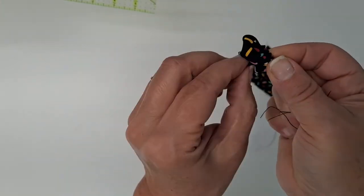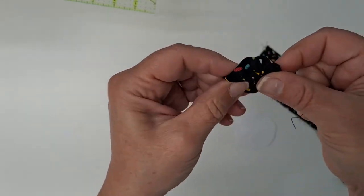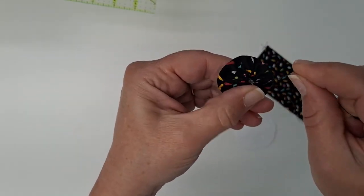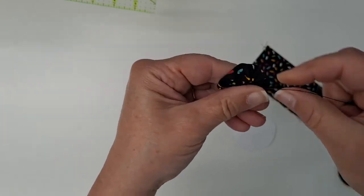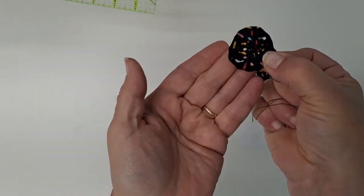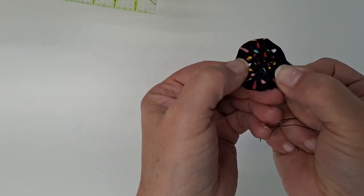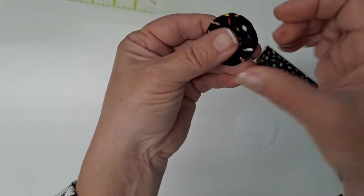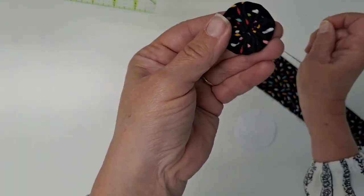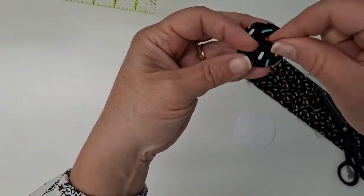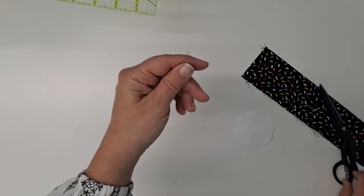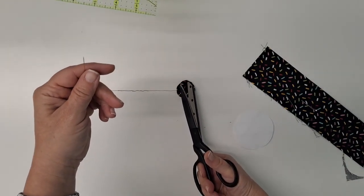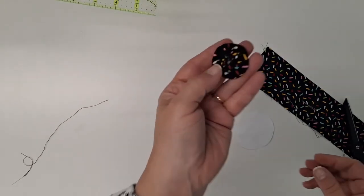That closes that up. I'm going to kind of play with how it gathers around, pull that tight so it closes in the center. And I just like to go down in the center there. And then I just tie it off. And I'm just going to clip my thread. And there you have a yo-yo.